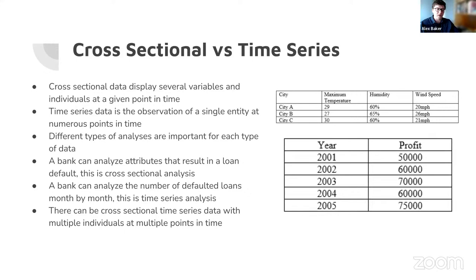Think of cross-sectional data as analyzing multiple entities at a single given instance, and time series as analyzing one entity over multiple different periods. For example, with bank loan defaults — a very popular beginner data science project — a bank might analyze the attributes that result in loan defaults by looking at the cross-sectional data, and get the general behaviors of loan defaults month to month using time series.